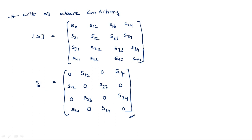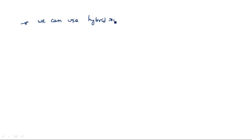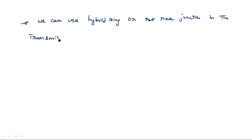This is the S-matrix of the hybrid ring or rat race junction. The main application of this rat race junction is that it can be used as a duplexer, similar to the magic T. We can use the hybrid ring or rat race junction in transmitters and receivers as a duplexer.